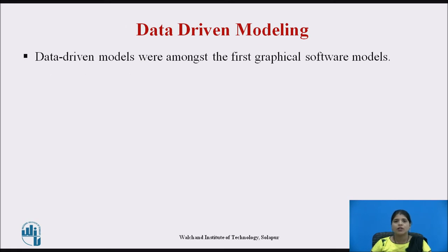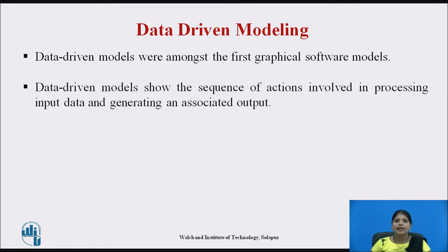Data driven models were among the first graphical software models. Many business systems are data processing systems that are primarily driven by data. They are controlled by the data input to the system with relatively little external event processing. Data driven models show the sequence of actions in processing input data and generating an associated output. For example, a phone billing system will accept information about calls made by a customer, then calculate the cost of these calls and generate a bill to be sent to that customer.